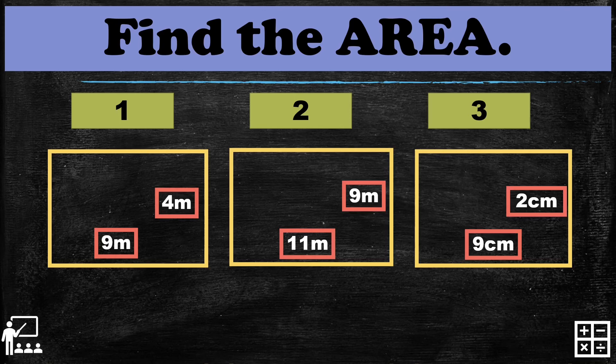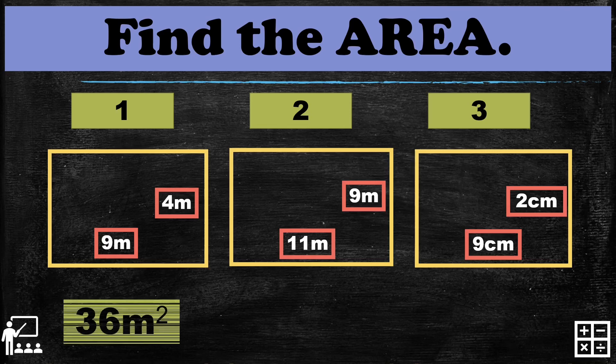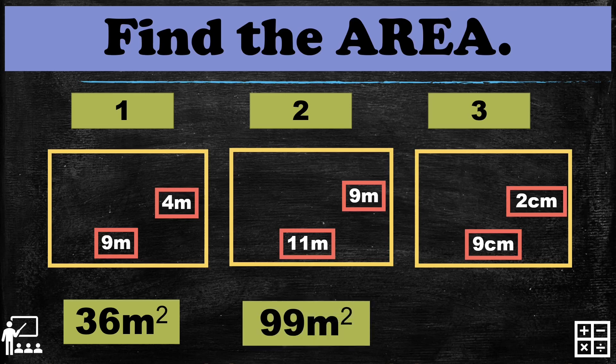Time is up! Let's find out if your answers match mine. The area of the first rectangle is 36 meters squared, because nine multiplied by four equals thirty-six. For the second rectangle, the answer is 99 meters squared, because eleven multiplied by nine equals ninety-nine.